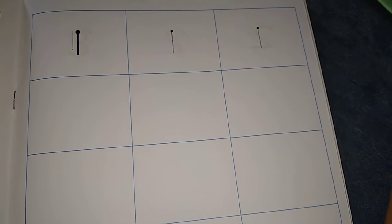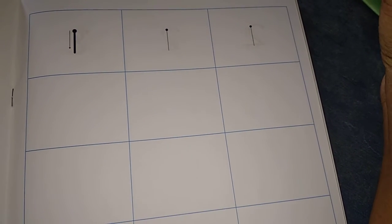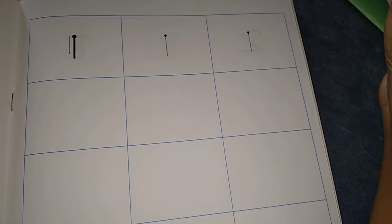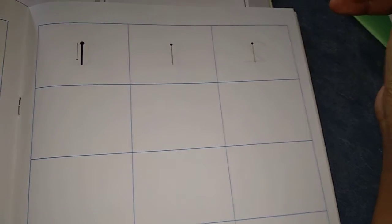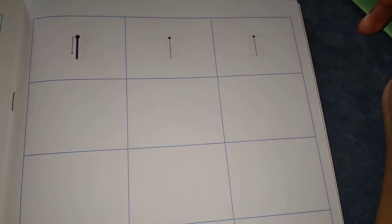See here, number 1 is there. So you have learnt 1 to 10 numbers, right? How to write 1 to 10 numbers. You all learnt, right? So let us see once again, okay?